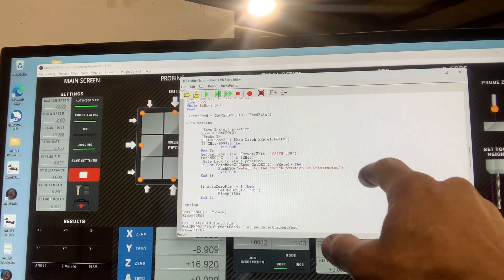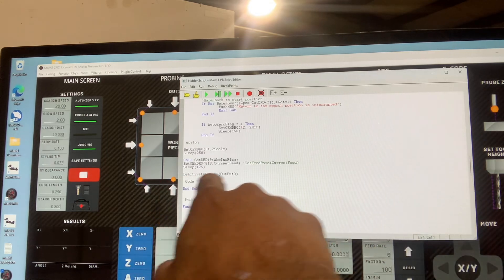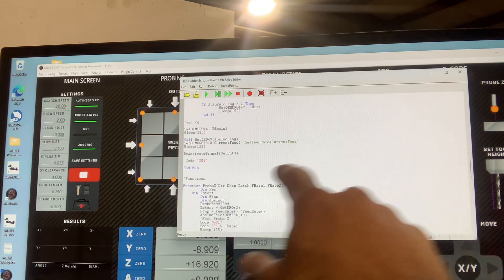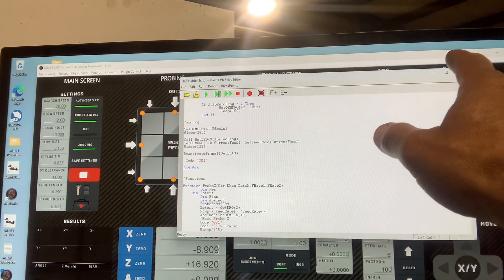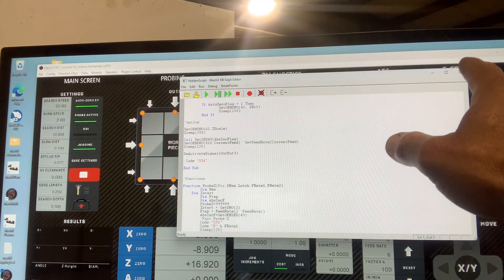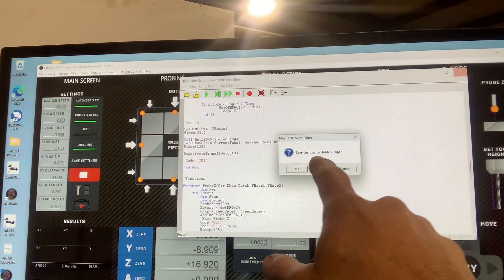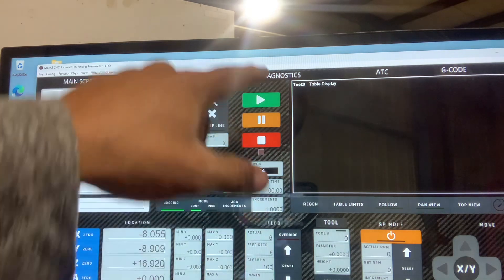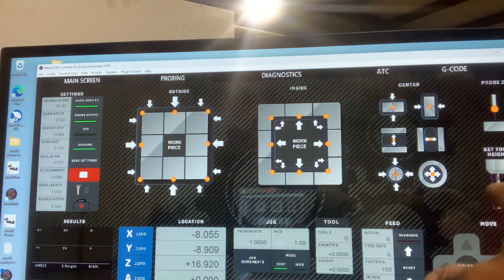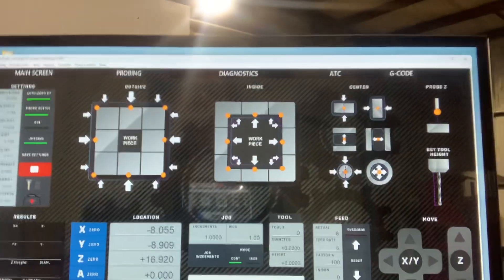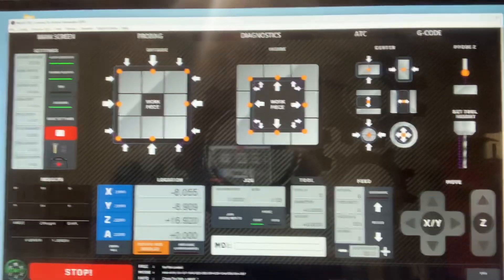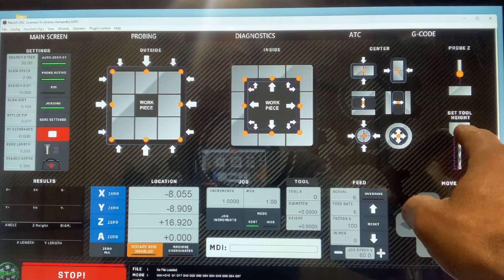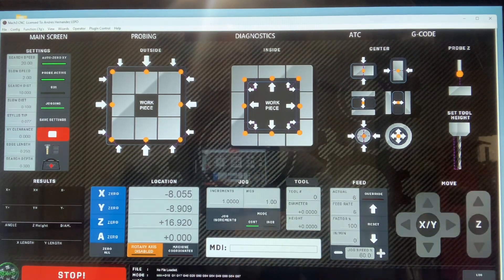Then I do the main part and deactivate output three. It goes back to regular mode on the probe, then it moves to G54. Why am I moving back to G54? Because the other day after I did the video for you guys, I was probing a tool on the tool height.